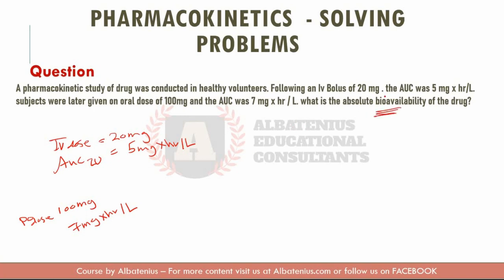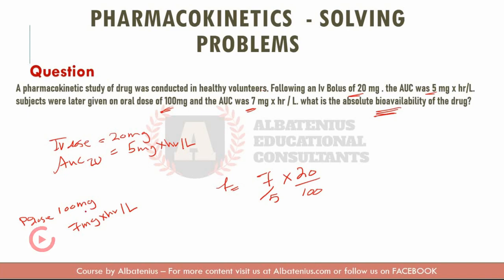The question is asking us for the absolute bioavailability. The first thing you want to do with any pharmacokinetic question is write down the data and the numbers. We have four numbers, and we know the equation for bioavailability: divide the AUC for oral by the AUC for IV, then multiply by the IV dose divided by the PO dose.